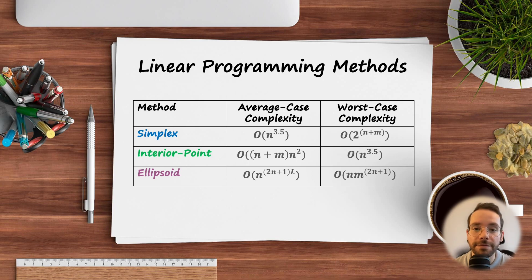We need to clarify that the interior method is a family of methods, and only the primal-dual path-following version of it offers polynomial worst-case guarantee.